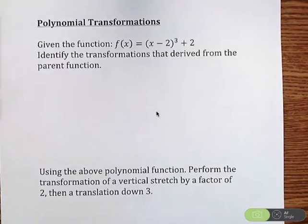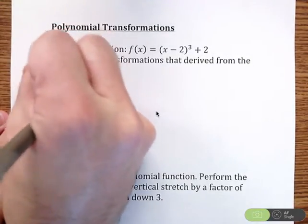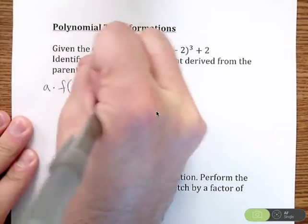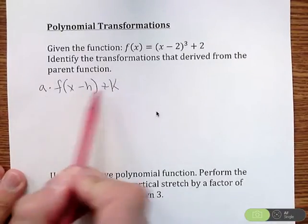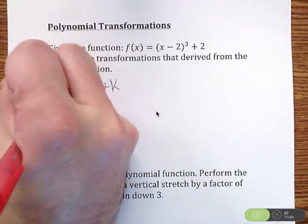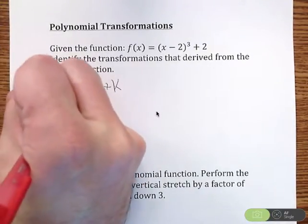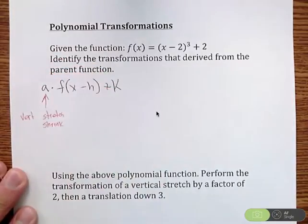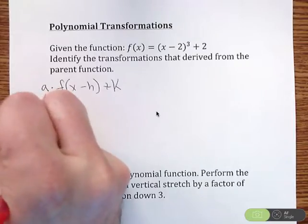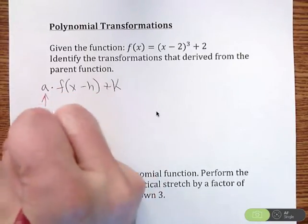So before I jump into this problem, it might be good just a quick review on the transformation. So we have a times f of x minus h plus k. So it might be a good idea to go over what transformations are there. So we primarily work with a, h, and k. So as a quick reminder, a is going to deal with your vertical stretch and shrink, as well as our reflections over the x-axis.